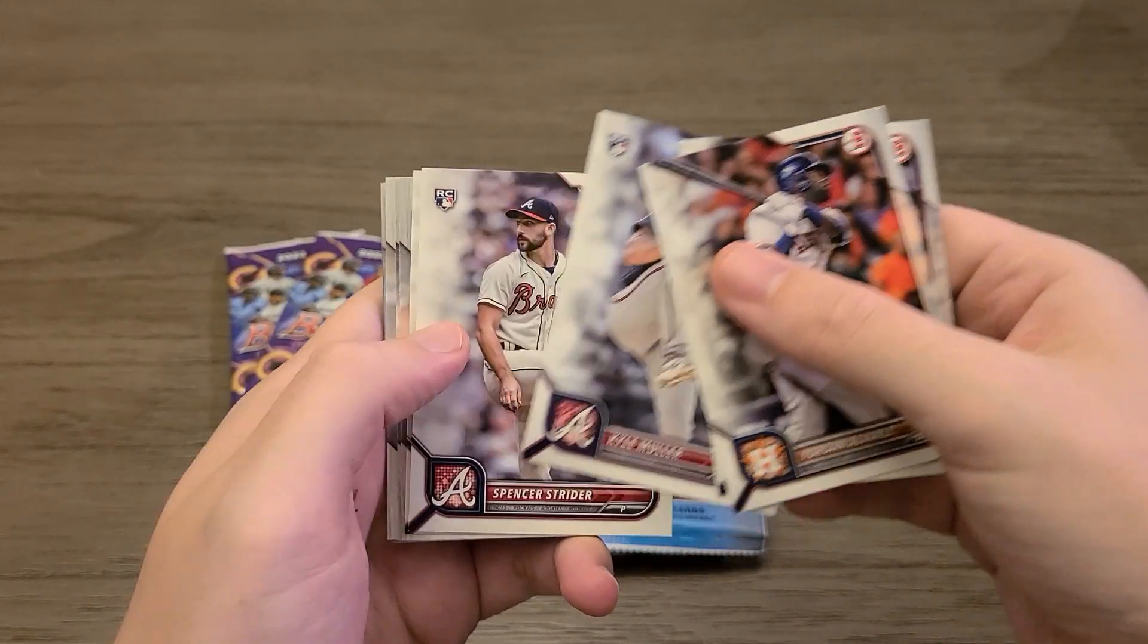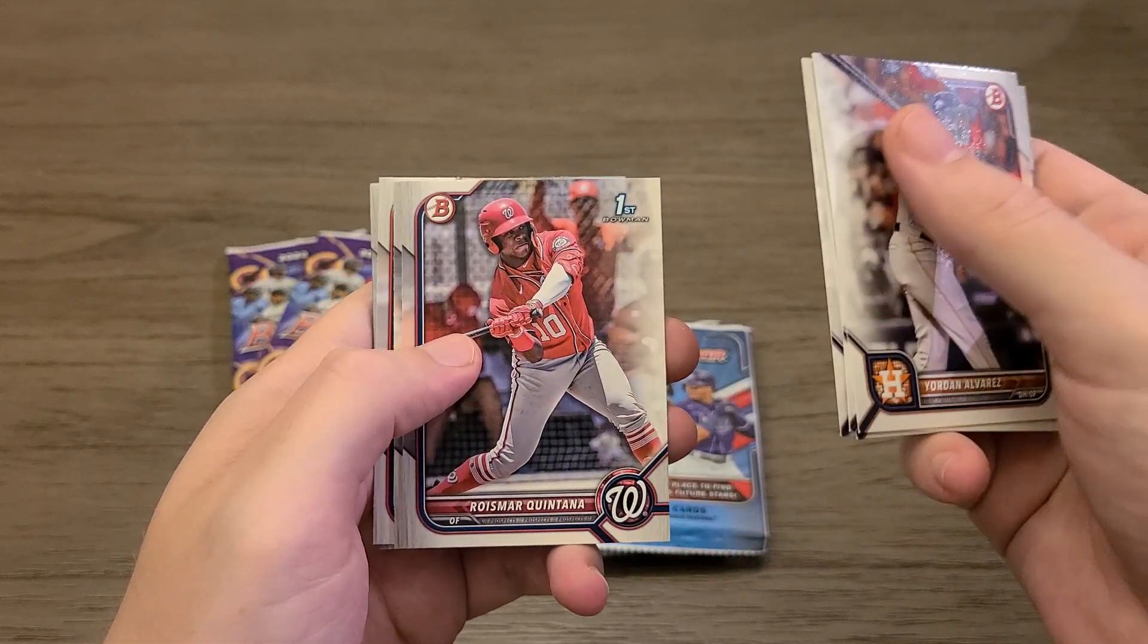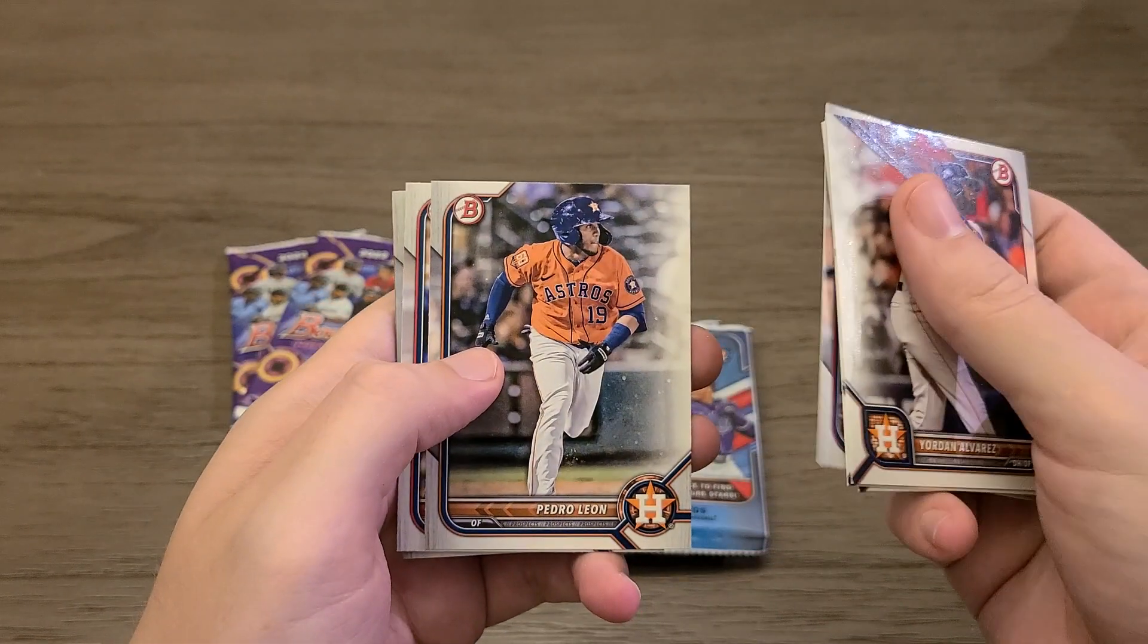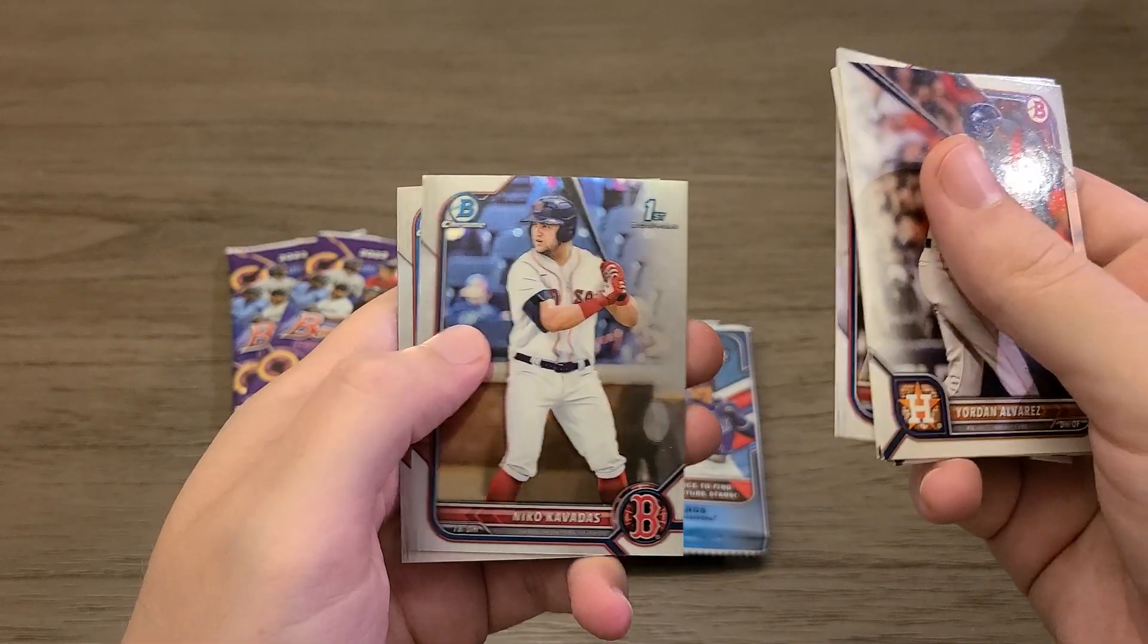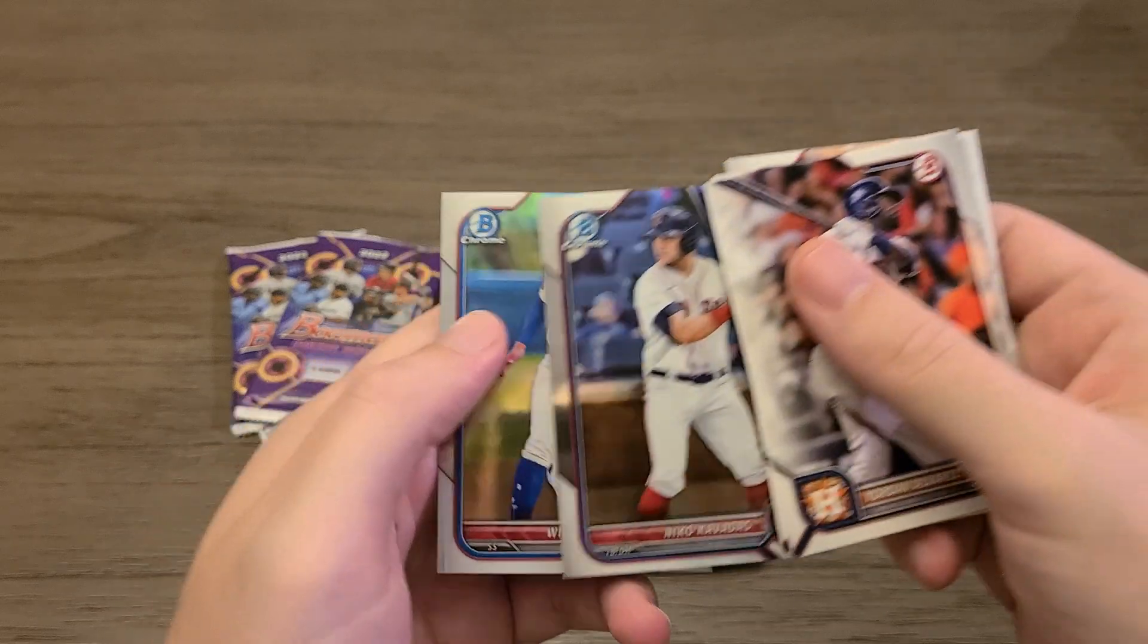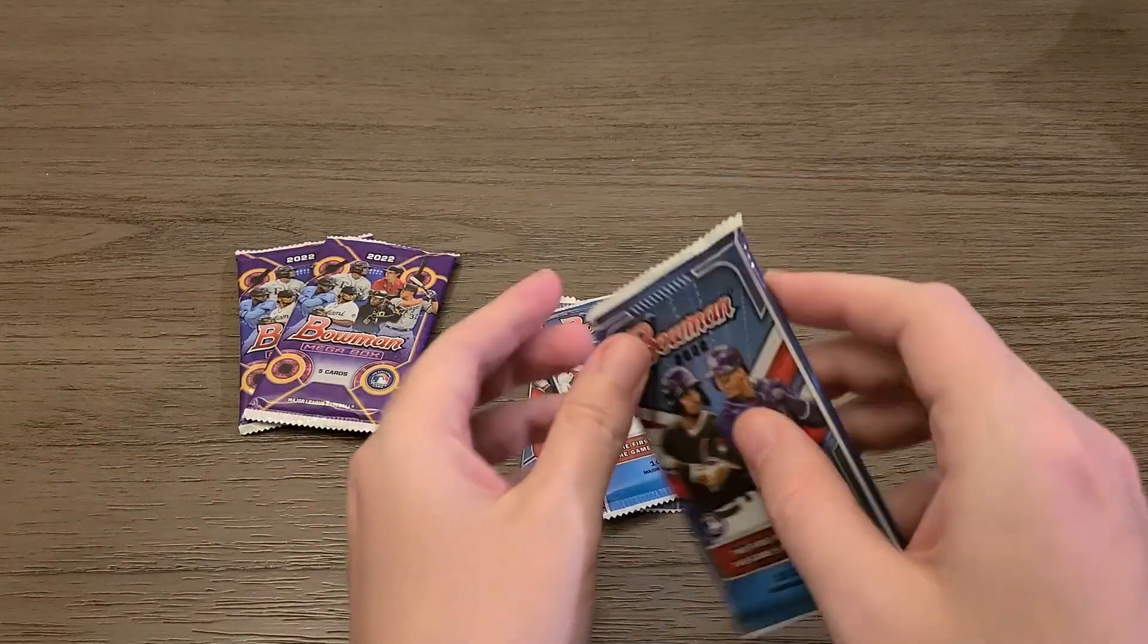Yordan, Corbin Carroll, there's a Spencer Strider, a Shohei, Royce Mort Quintana, Pedro Leon, Eduardo Lopez and the chrome is Nico Kavadas and Wilman Diaz. So nothing huge in that first pack. Let's move on to the second.